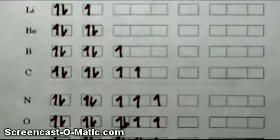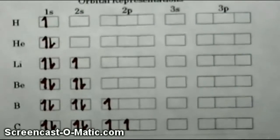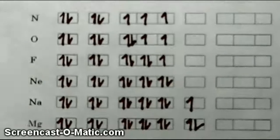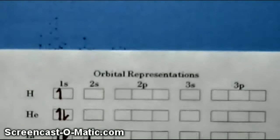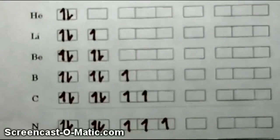So that's how we do box diagrams — a simple technique to represent where the electrons are in the modern atom without drawing all the orbital shapes. There's one more way to represent the modern atom, called the electron configuration, and we'll save that for next time.